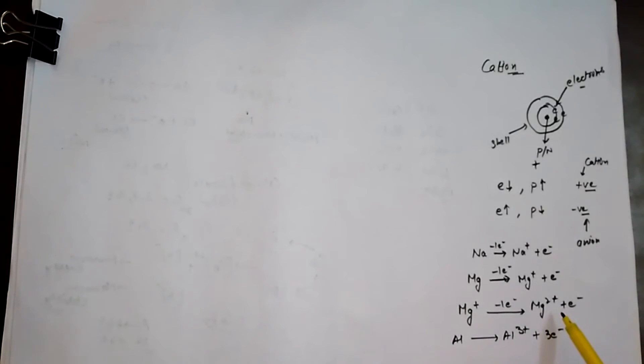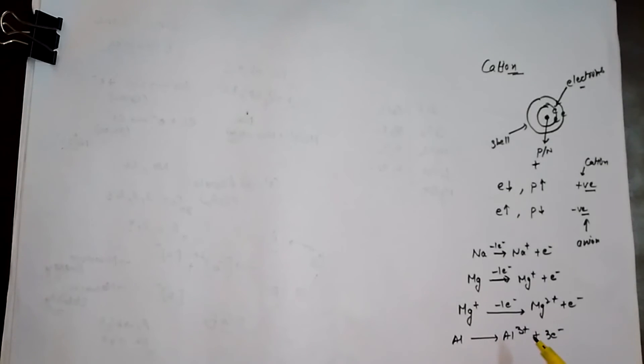Magnesium atom can lose two electrons to form a magnesium ion having two unit positive charge. If an atom loses three electrons, then the cation formed has three unit positive charge. Here, aluminium can lose three electrons to form an aluminium ion having three unit positive charge.